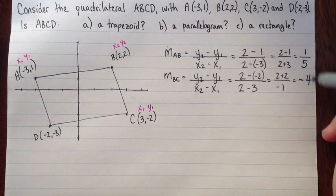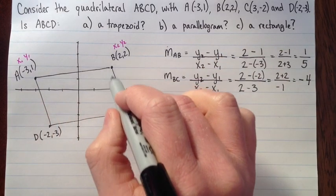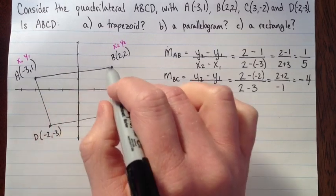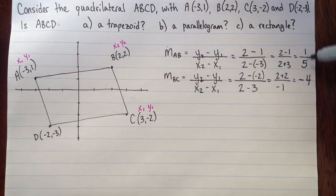Here's what we know already. These lines are not perpendicular. If they were perpendicular, the slopes would be negative reciprocals, so they'd be upside down of each other and opposite signs. The negative reciprocal of 1/5 is negative 5, and the slope is negative 4. So they are pretty close to perpendicular, but they're not perpendicular.